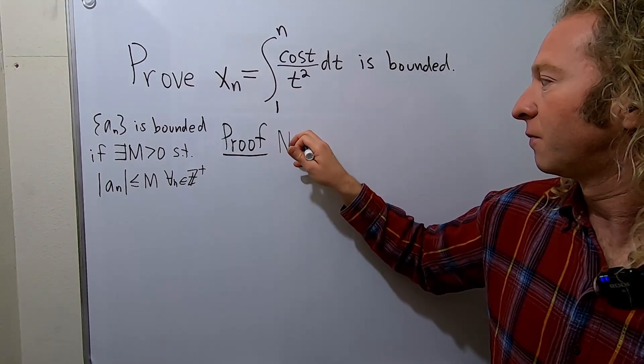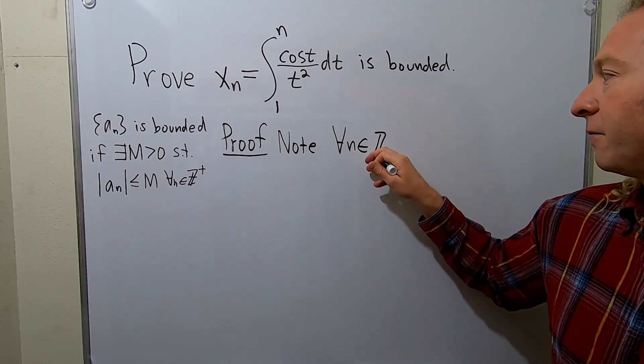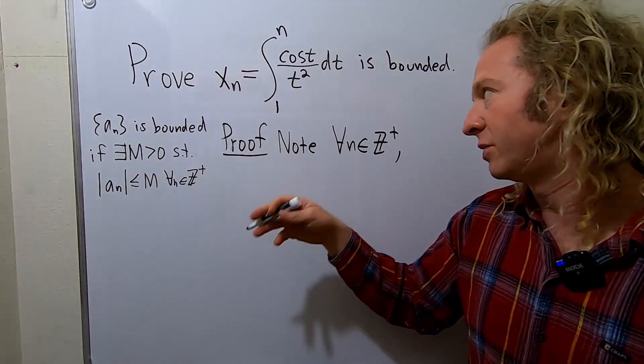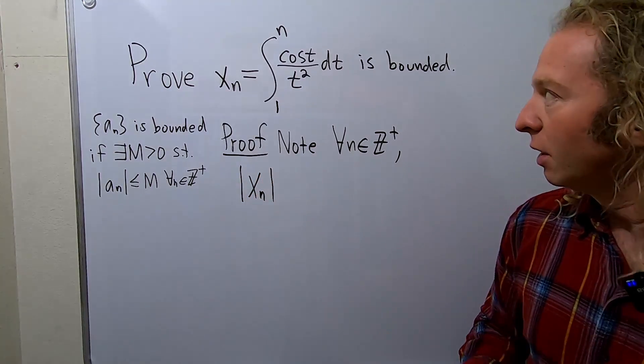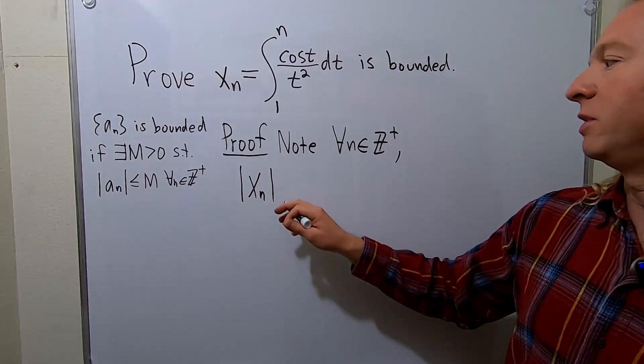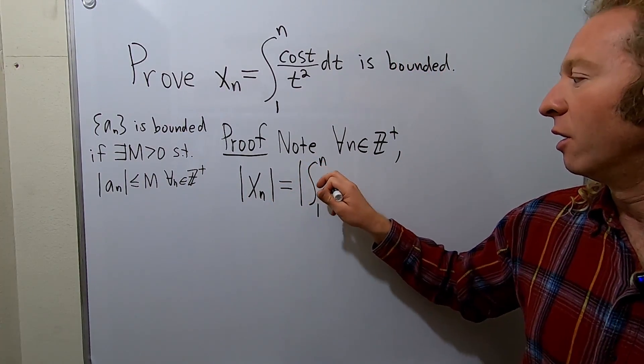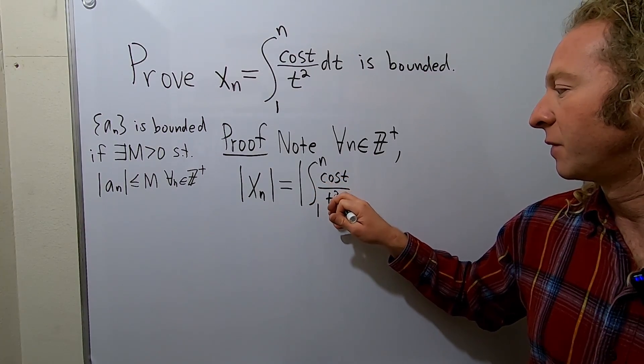for all n, for all positive integers n, we're going to look at the absolute value of this sequence. So the absolute value of x sub n, well, that's equal to the absolute value of this definite integral. So this will be equal to the absolute value from 1 to n of cosine t, and this is over t squared dt.